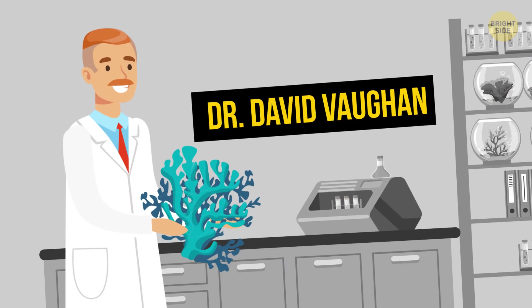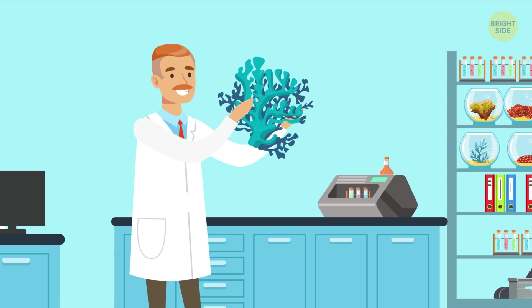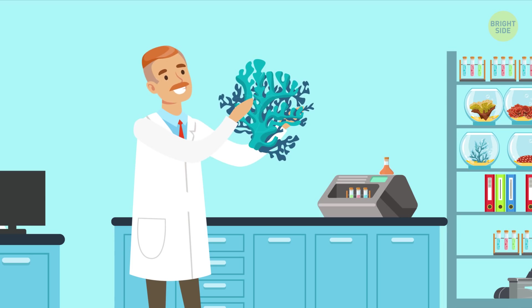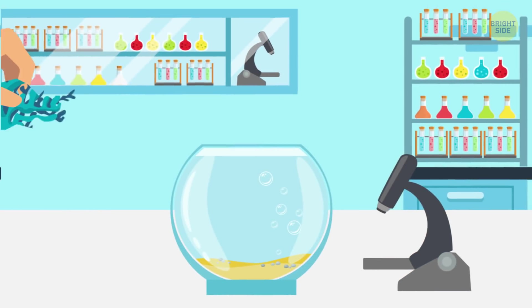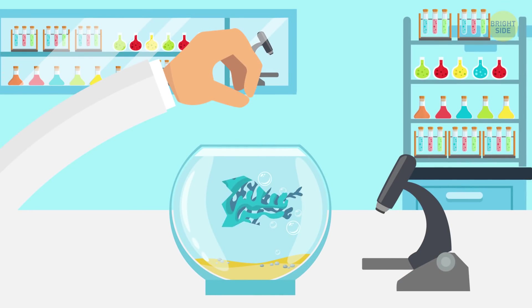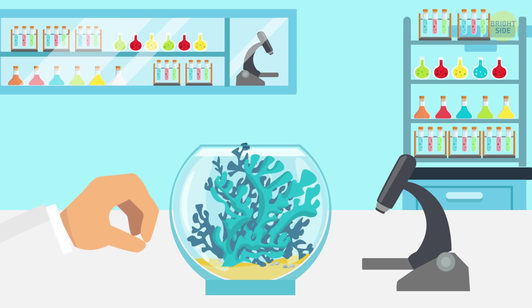Luckily, Dr. David Vaughn found a way to rebuild our planet's coral reefs, and he pretty much made the discovery by mistake. One day, Dr. Vaughn accidentally broke one of the corals he was studying and left the piece that fell off in a tank of water. It appeared that this piece alone survived and began to grow much faster.